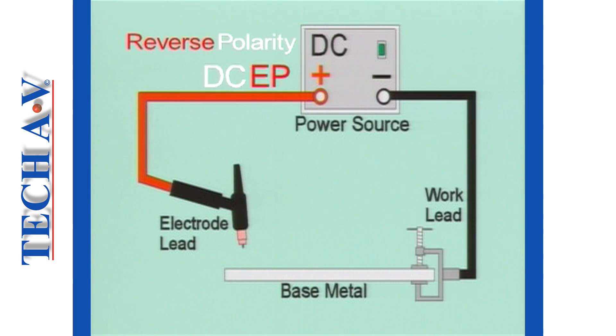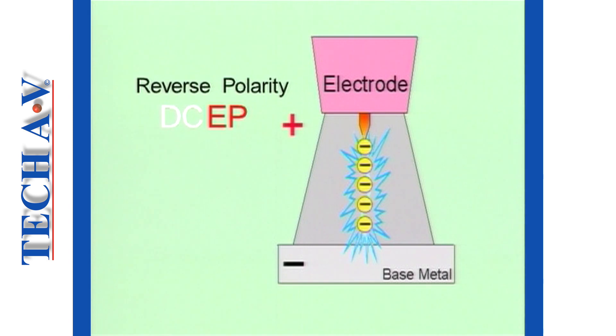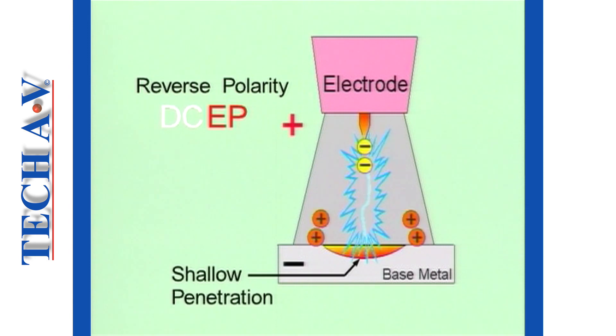With reverse polarity, 70% of the heat moves to the electrode, which is why the use of reverse polarity is limited to relatively low welding currents. Reverse polarity is best suited for thin metal, as it results in a weld with shallow penetration.